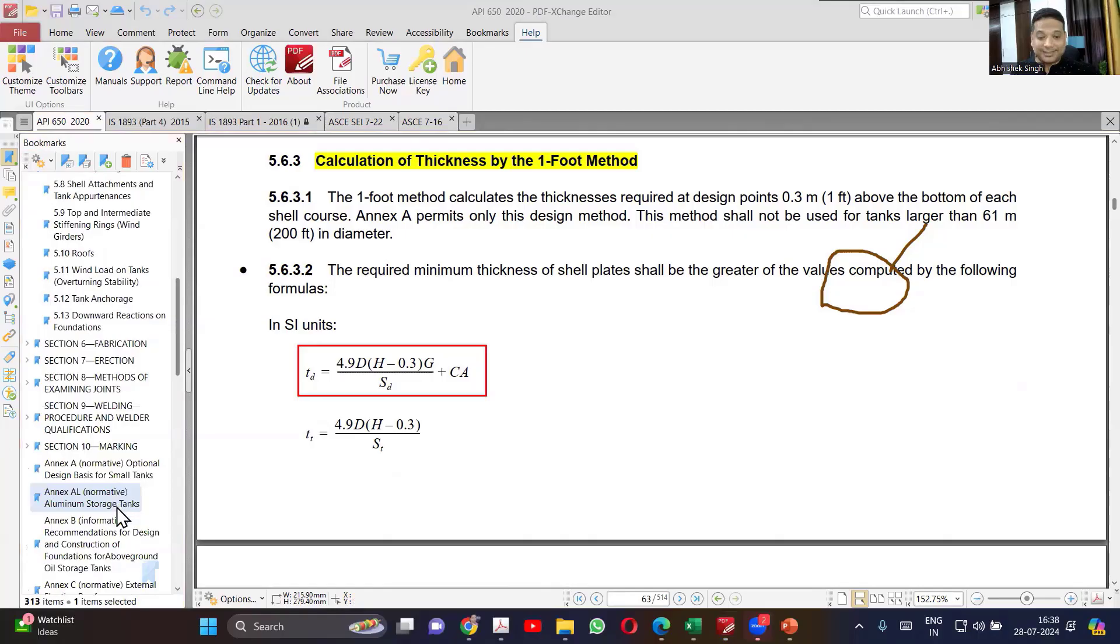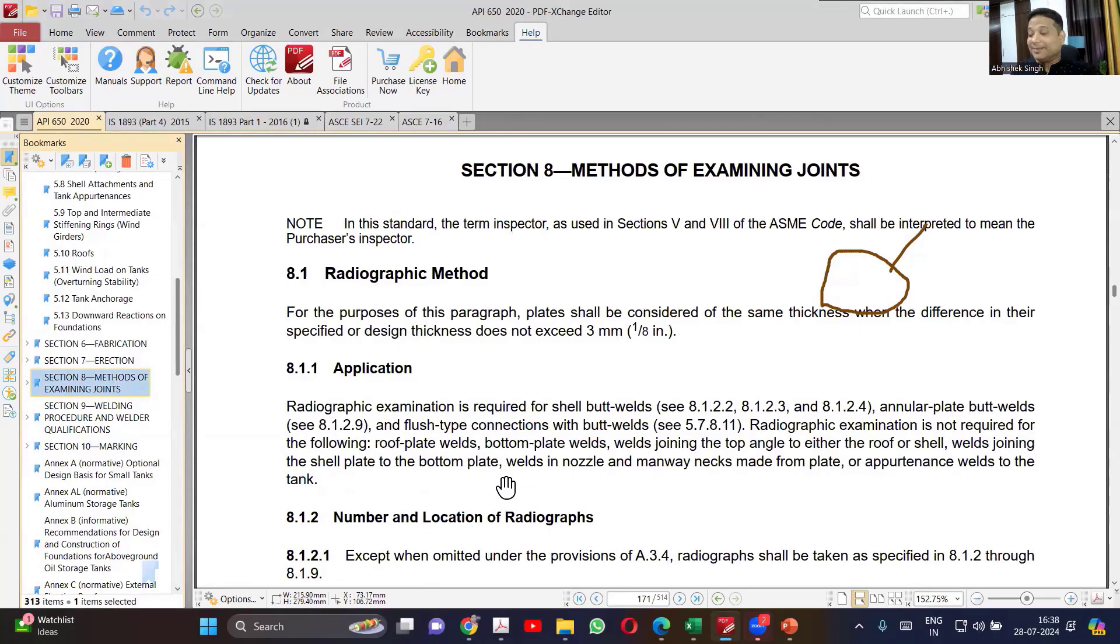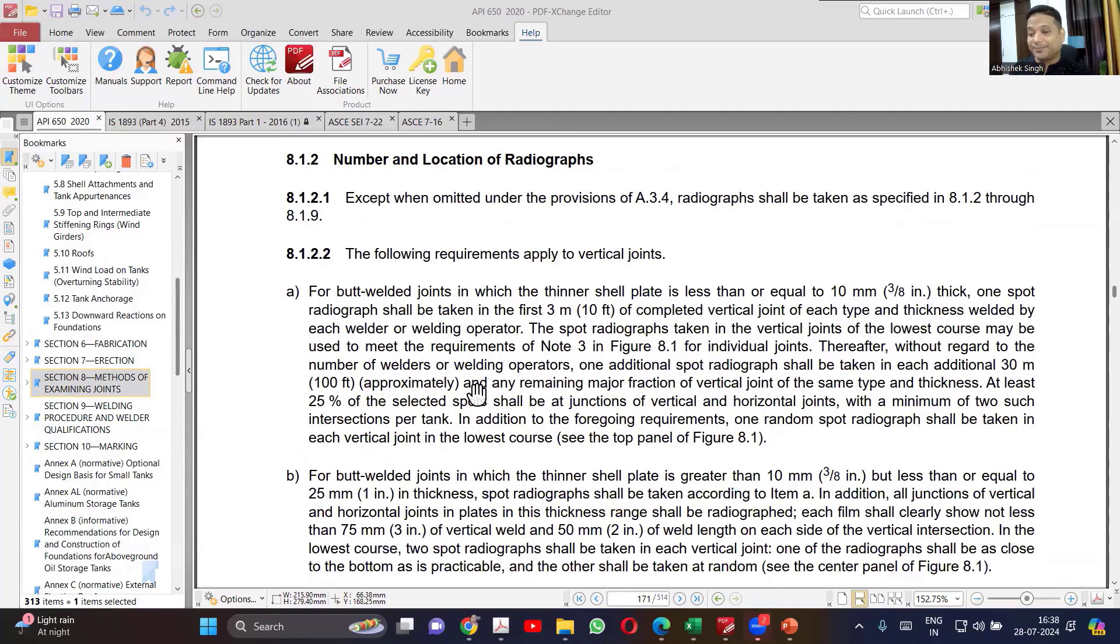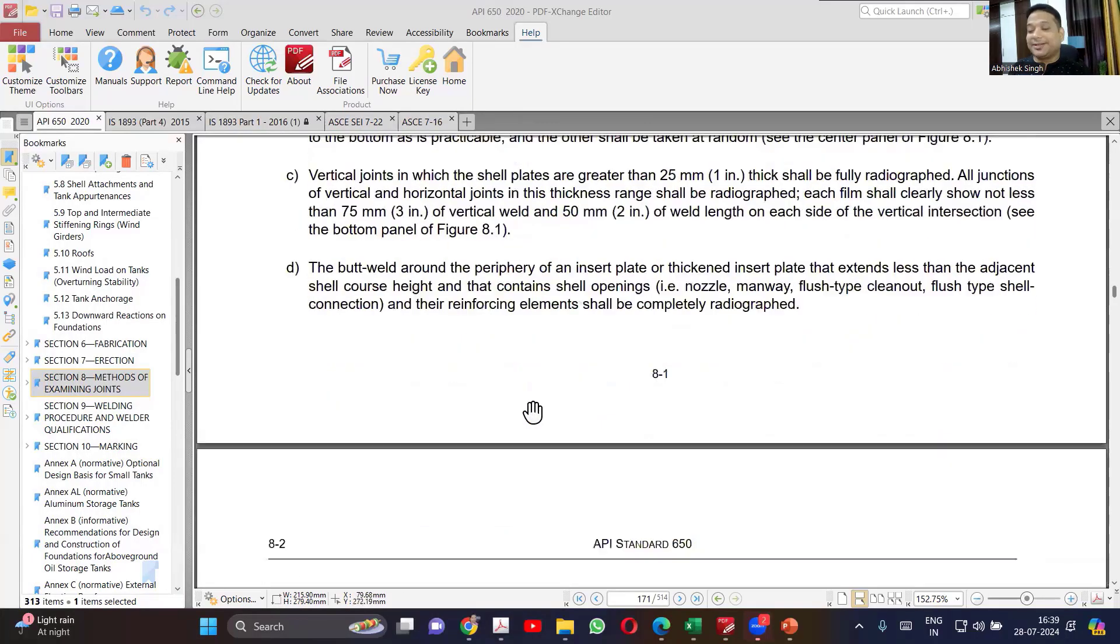Now if you see the examination part, many people get confused that how it is considered. So basically what it is saying? Obviously one is considered as joint efficiency, but how one is considered is by defining the radiography examination. The extent of ND you are fixing. There is no flexibility or choice in that. You have to do radiography. Not full, but proper definition is there.